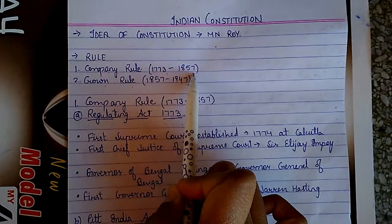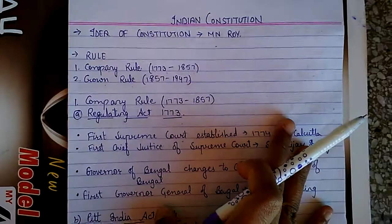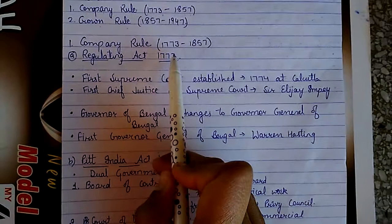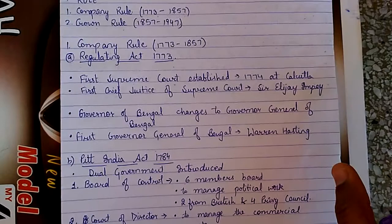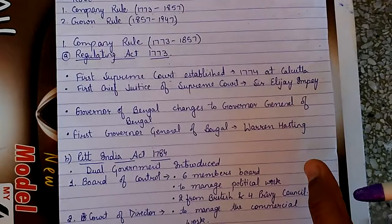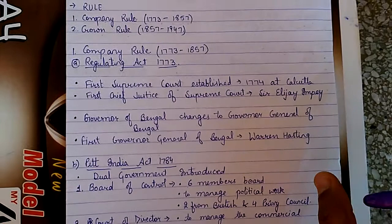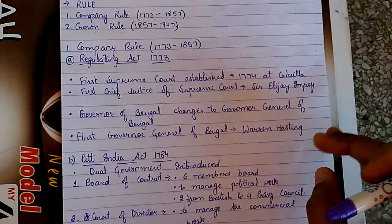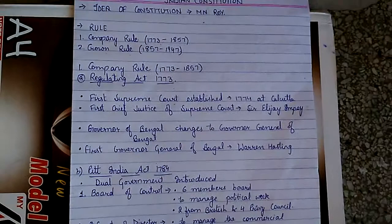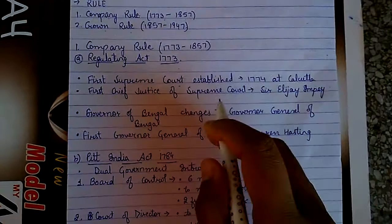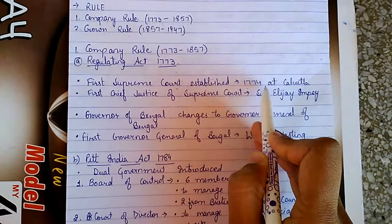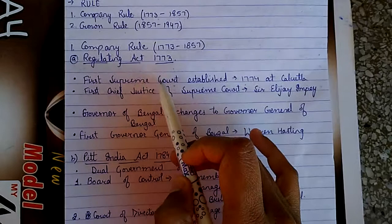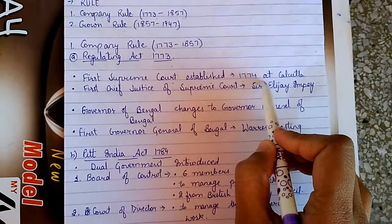First, we study Company Rule from 1773 to 1857, and we will read about all the acts that came under Company Rule. The main rule starts from 1773 when the Regulating Act came, and it lasted till 1857. Under the Regulating Act 1773, the first Supreme Court was established in India in 1774 at Calcutta. This question is asked very frequently — when was the first Supreme Court established in British India? The answer is 1774 at Calcutta.